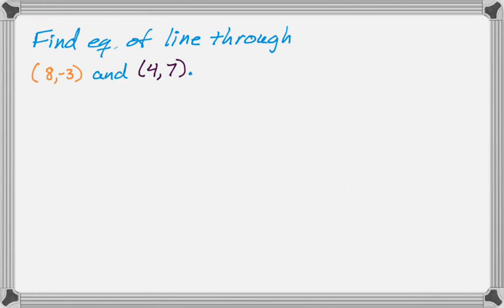Let's do an example. So we want to find the equation of the line that passes through the points (8, -3) and (4, 7). So first thing I need is slope, because I already have two different points, so I could actually write the equation two different ways, but I don't have the slope, so I'm going to calculate that.